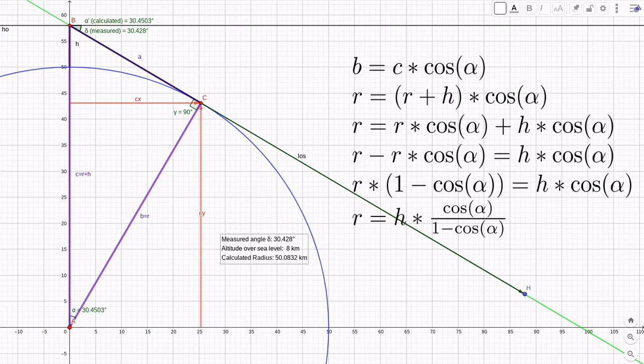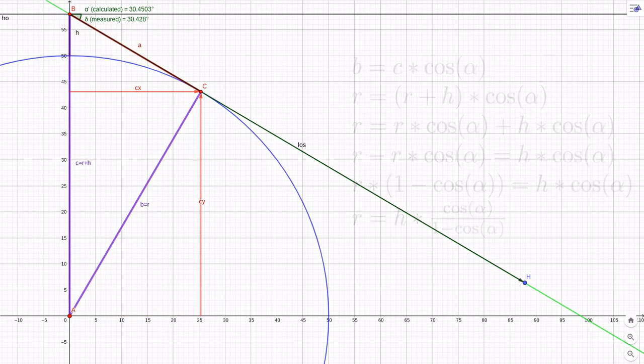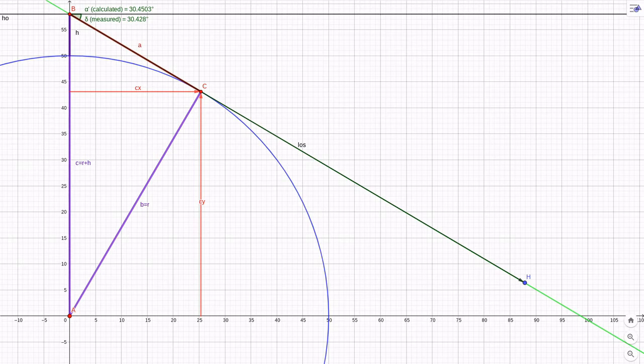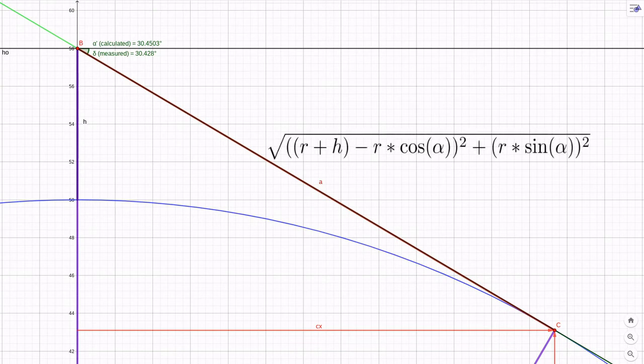And because B is the hypotenuse of a triangle with the same angles as ABC and its length is Earth's radius R, it's easy to find C's coordinates. CY is R times cosine alpha and CX is R times sine alpha. Good old Pythagoras then tells us the distance to the furthest visible point on the horizon C.